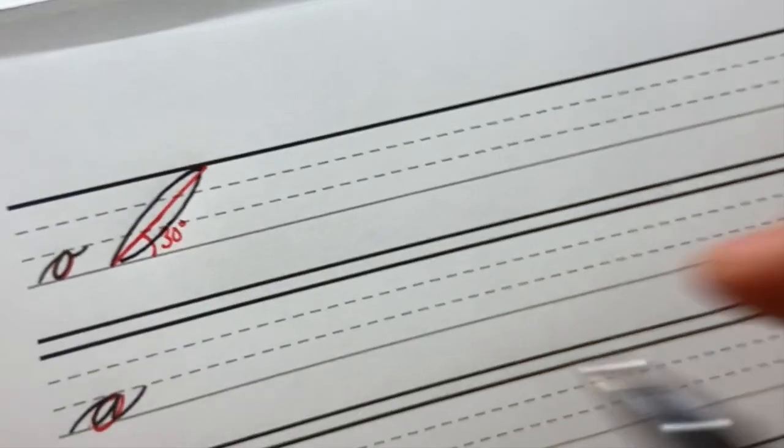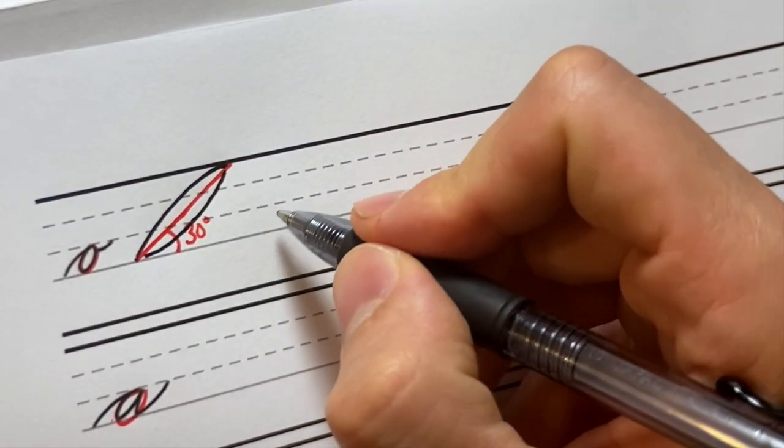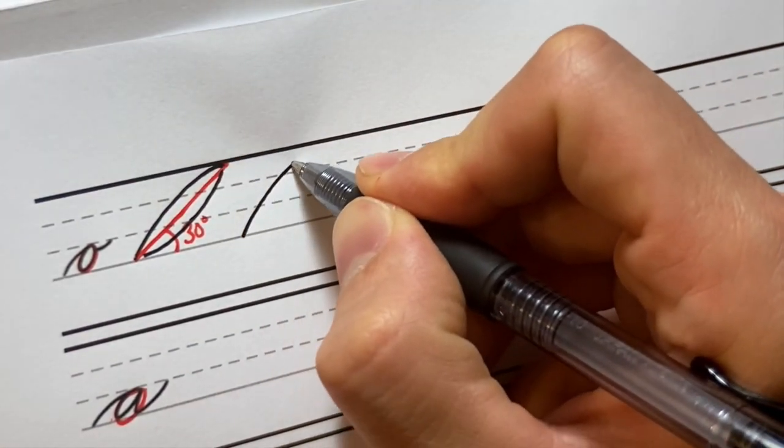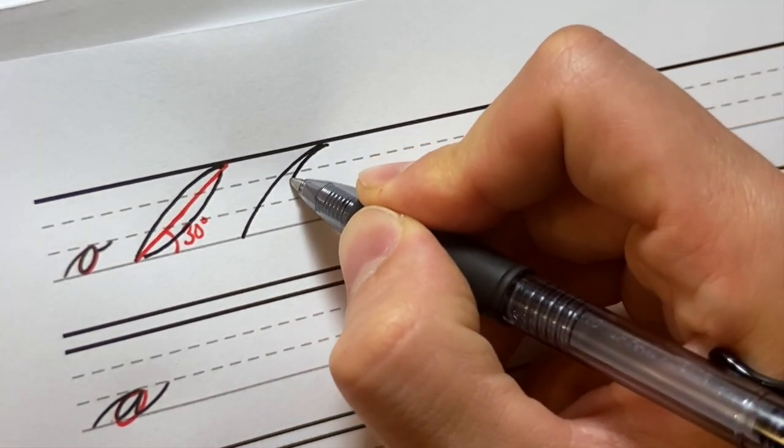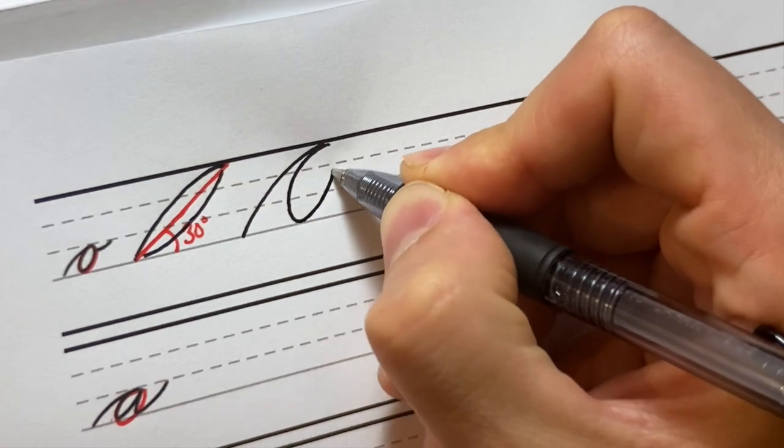So with the O, I'll make it nice and big here. We're going to have an entry stroke that goes overturn, entry stroke. Then we make our oval on slant.